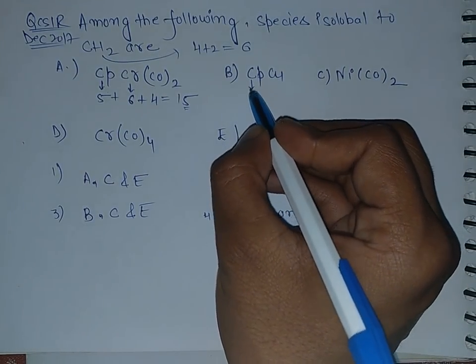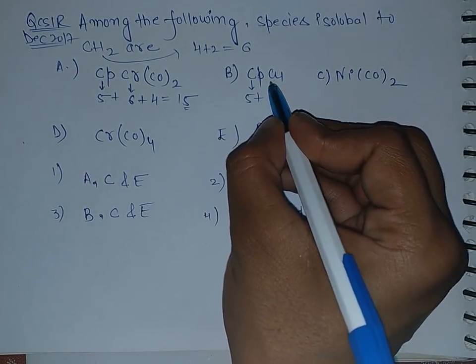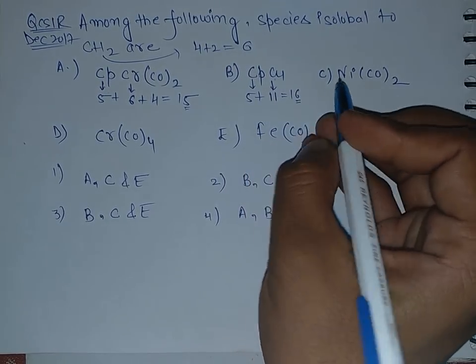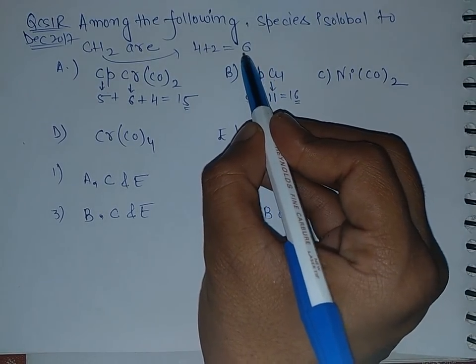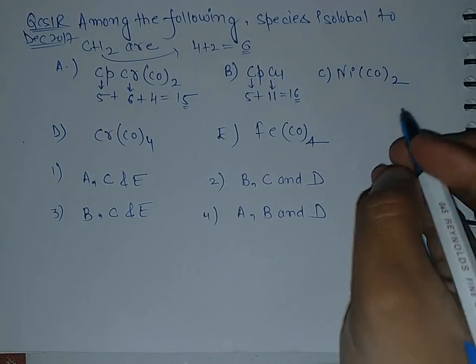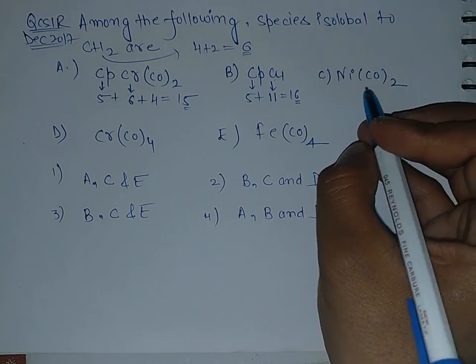Now see second option. This is CP, 5 plus copper is 11, so this is 16. The last digit is same as this main group element, so this can be the answer.